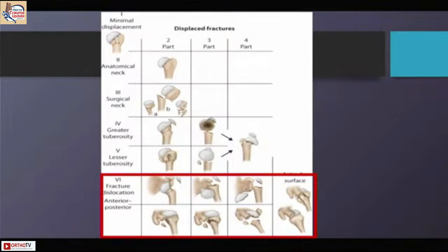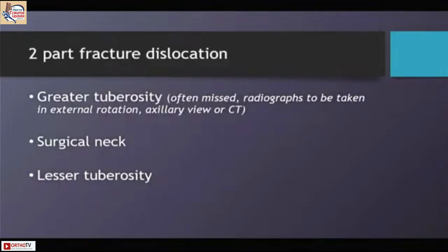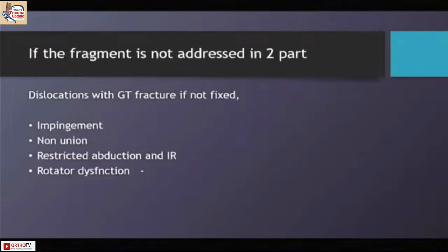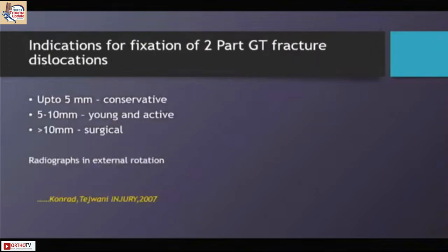I will discuss whether it is a tuberosity dislocation or a three-part or four-part fracture dislocation. In two-part fracture dislocations, the commonest variety is the greater tuberosity, then the lesser tuberosity, then the surgical neck. Often closed reductions are successful in greater tuberosity dislocations; the dislocation should be reduced very gently, often under general anesthesia. There is always the dilemma of whether the greater tuberosity will sit back into the defect once reduced.